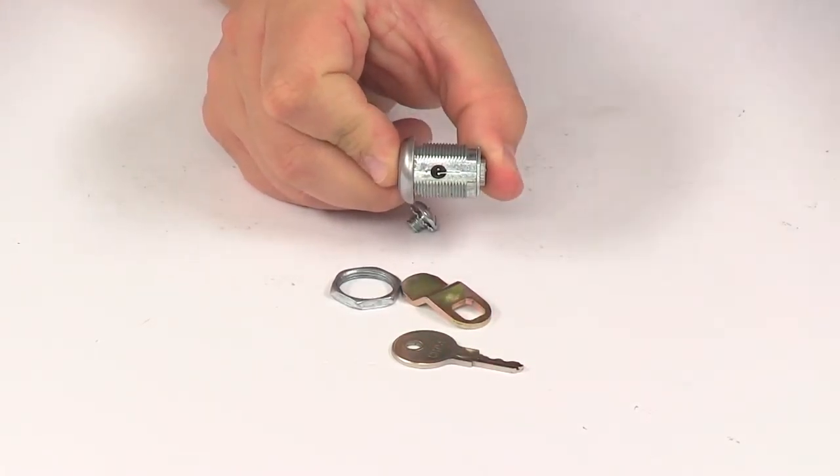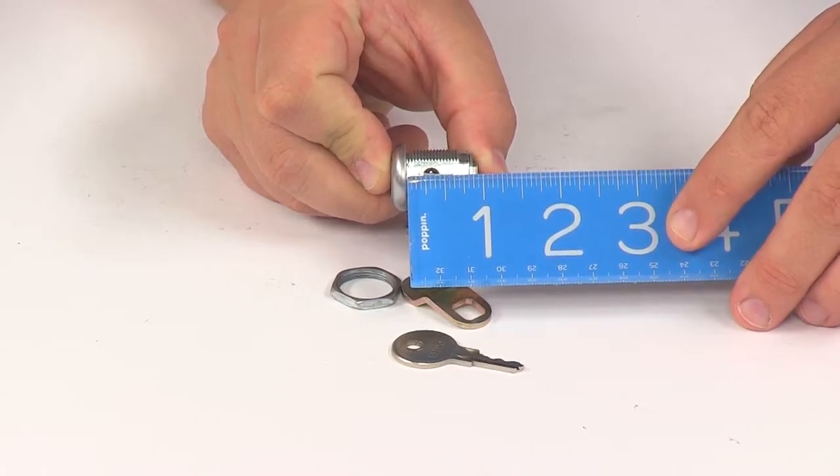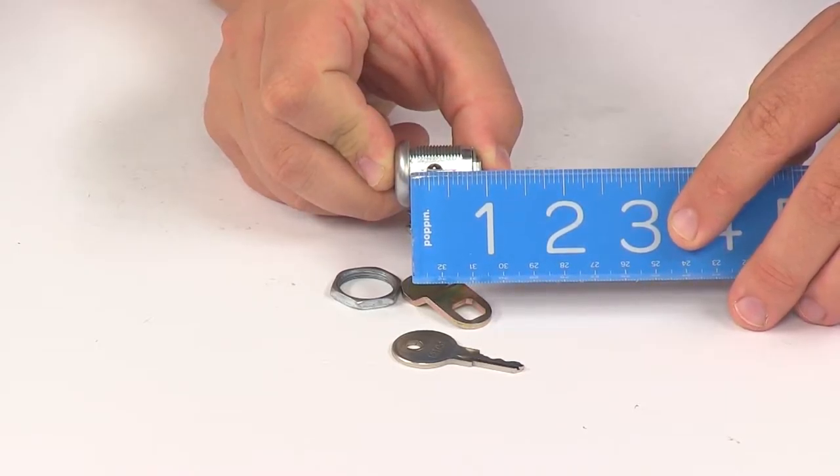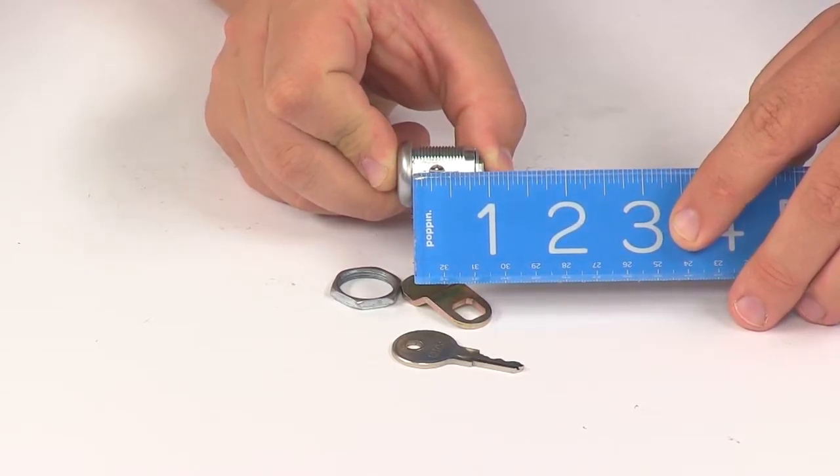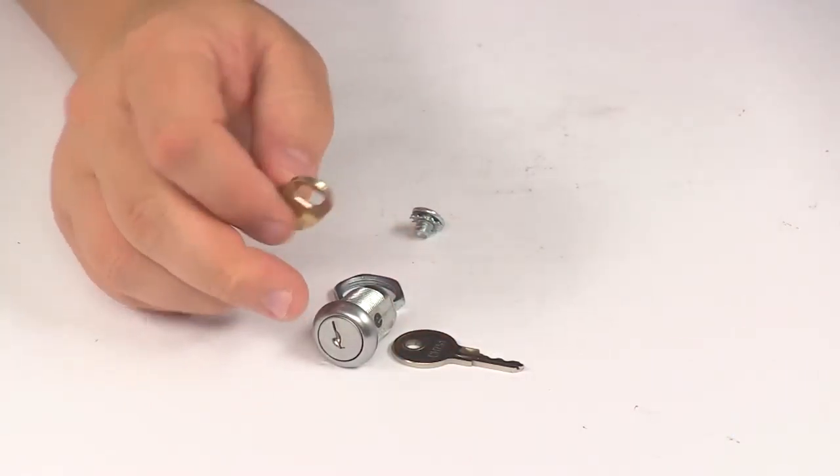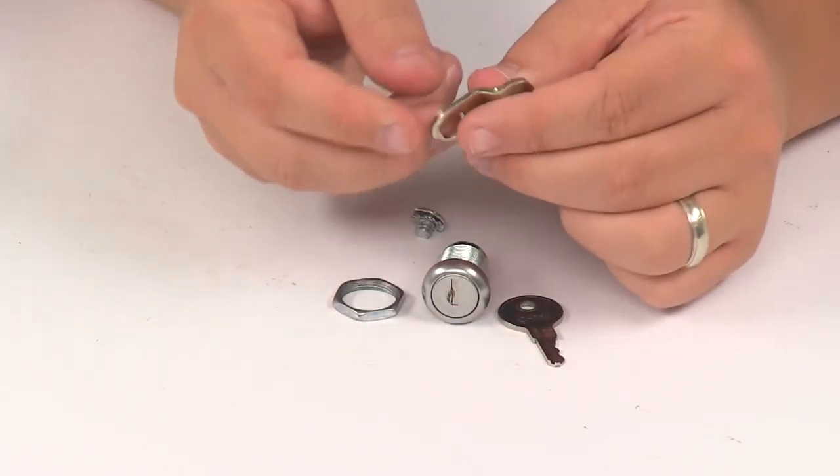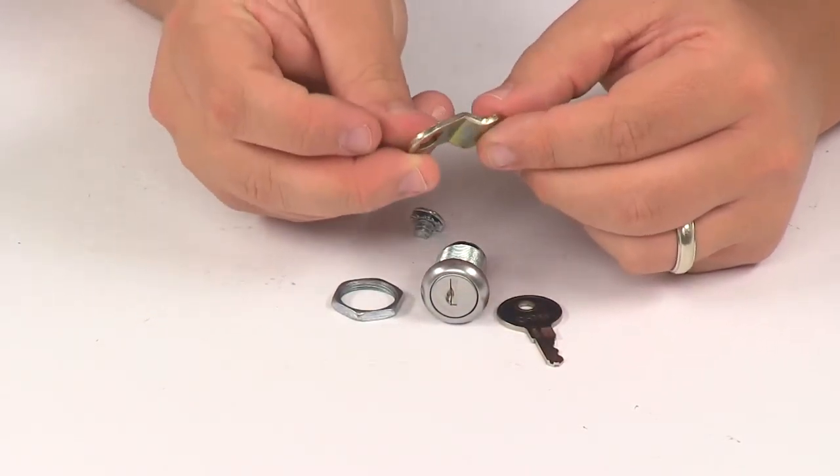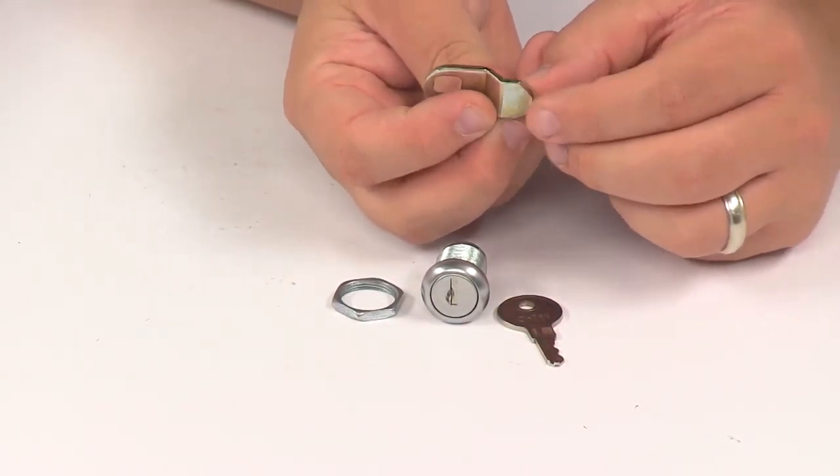I'm going to disassemble the unit and take a measurement of just the cylinder. Measuring from the back of the flange to the very back of the unit gives us about one inch, maybe fifteen-sixteenths of an inch.